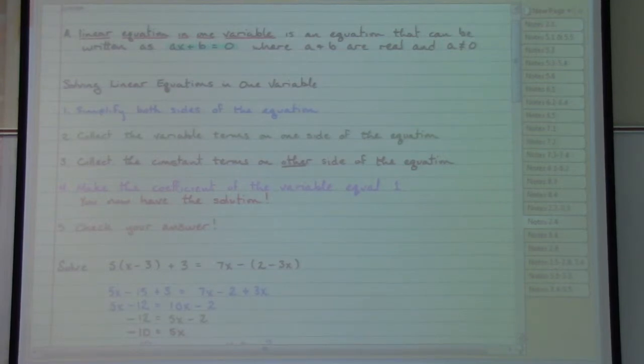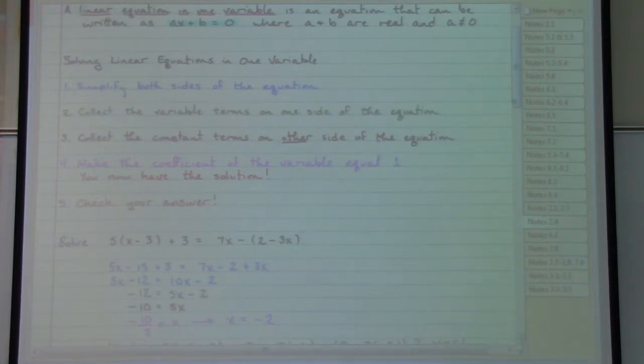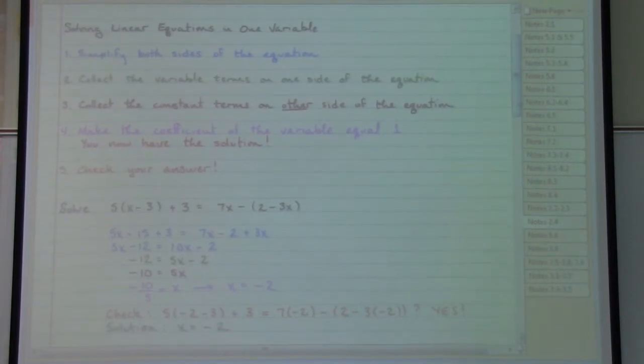Now in order to get rid of the 5, 5x means 5 times x. The opposite of times is divide. Divide on both sides by 5 and I will get an answer x equals negative 2. Now this should be correct if I've done all the correct work but I can make sure that I am correct by checking that answer and I do in fact find that that is the correct answer. That is the solution x equals negative 2.